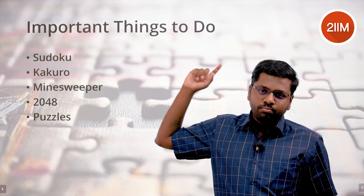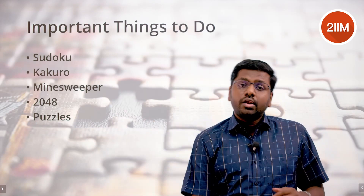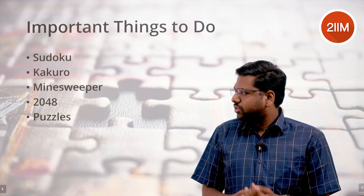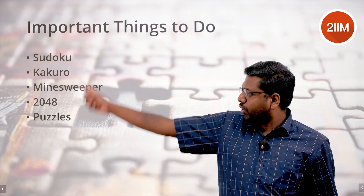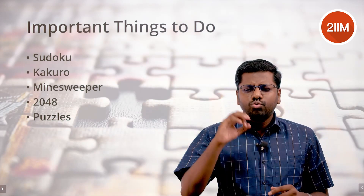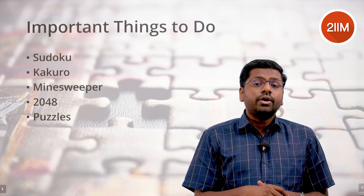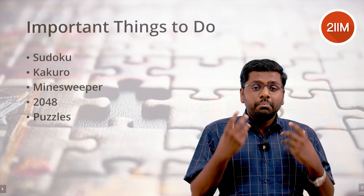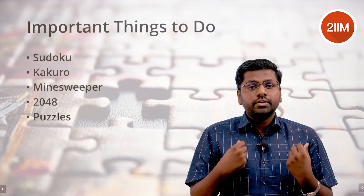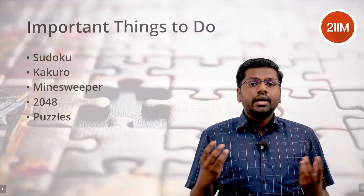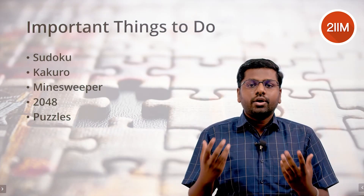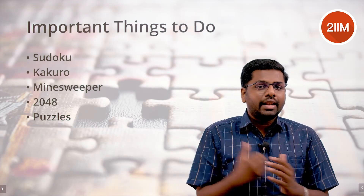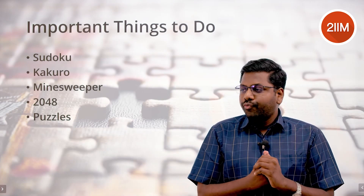If you are one of those who don't get it naturally, these are the things you should drown yourself in over the next six months and see where it takes you. These six months of doing all of these things will be super helpful, because the sharper your brain is at receiving and breaking puzzles, the better you'll be at solving CAT-level puzzles.